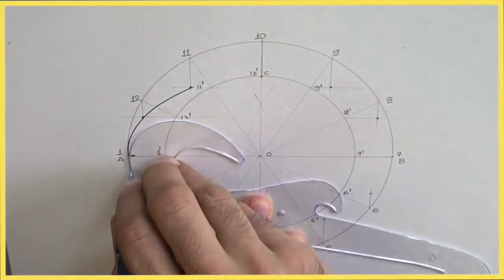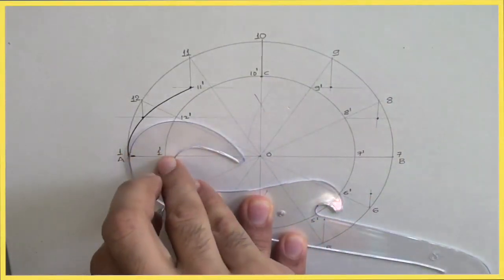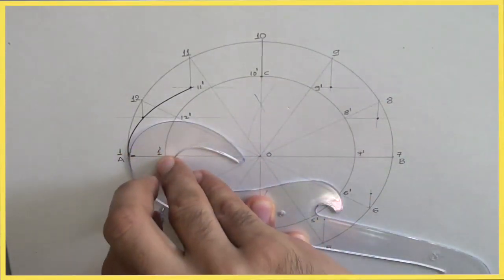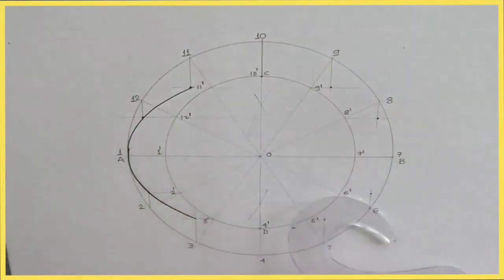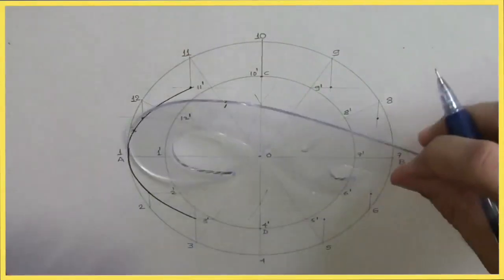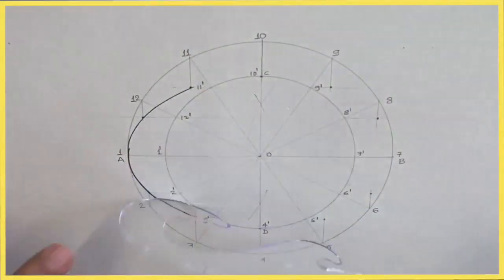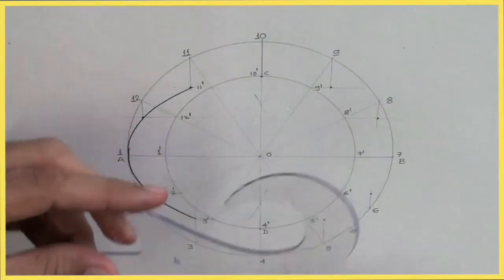Once you have got those points, you just do the marking and flip it. So it will be easier for you to draw. It will be easier for you to draw the curve on the other side. Now, same way.